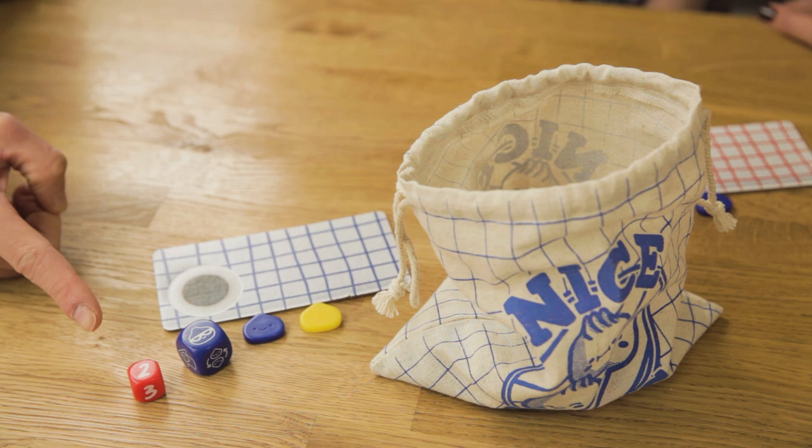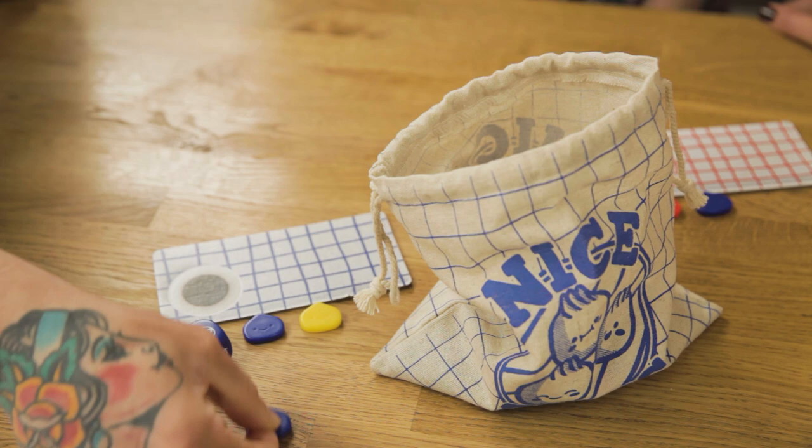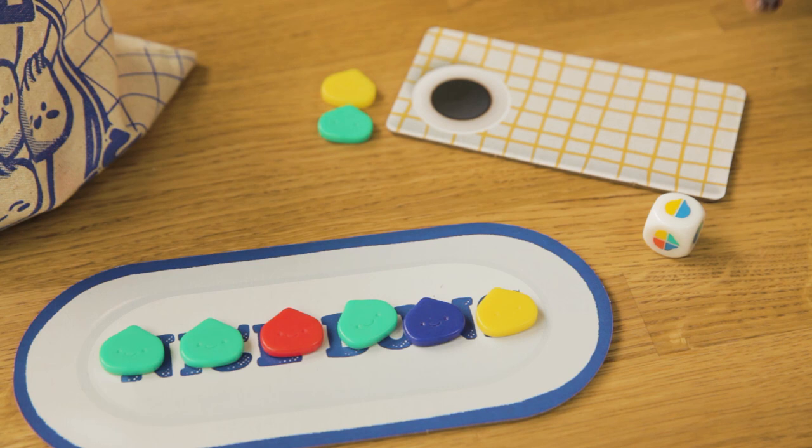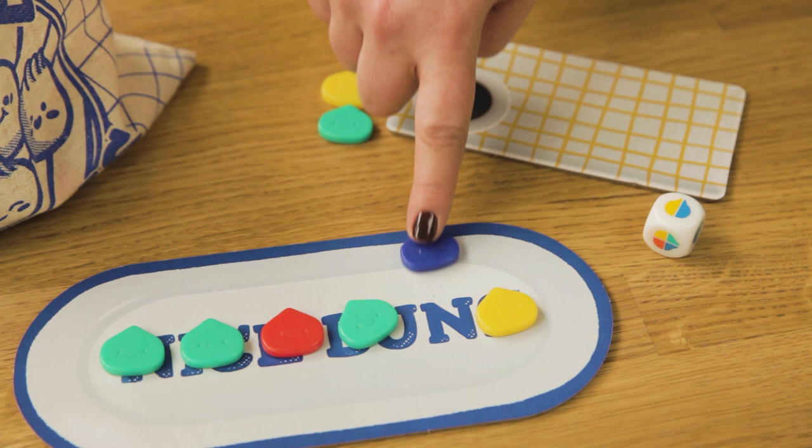So first the player who has the small dice resolves their action. In this case that means taking two buns from the steamer bag. Next the medium dice, that's mine. This symbol means that I can take a blue or yellow bun from the serving tray.